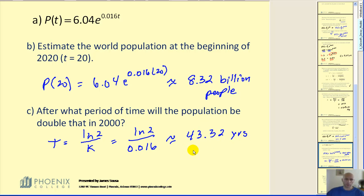So according to this model, the population will double that of the year 2000 in a little over 43 years.